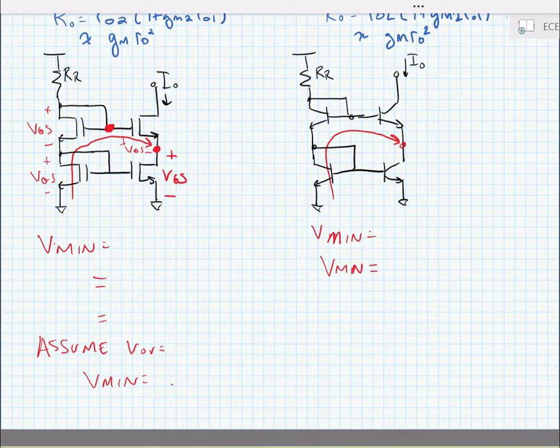Now the top device only requires an overdrive voltage or a VOV. We can show the same thing for the bipolar case. We need a VBE across the bottom device in the cascode stack and across the top device we would just need a VCE_SAT. So we can write that the minimum voltage that's allowed at the output terminal Vmin is equal to a VGS plus a VOV.